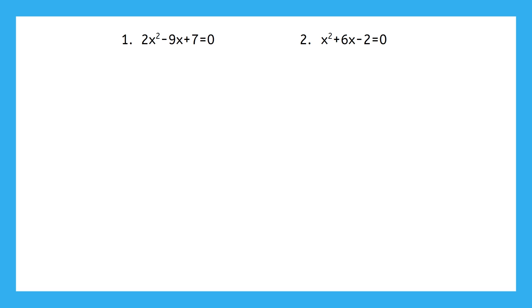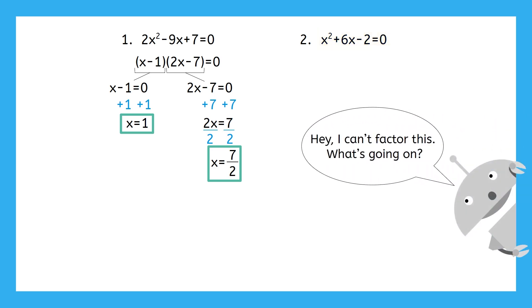So, what did you think about those warmup problems? Did you run into any issues? You may have found that you were able to factor this first equation, and your work may have looked something like this, but what about that second equation? Were you able to factor that one? You may have found yourself thinking, hey, I can't factor this, what's going on?